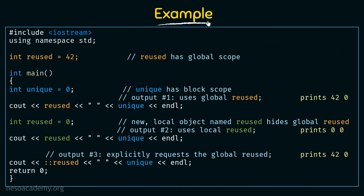Here I have a program. We have our header and using namespace std. I am declaring a variable called reused of type integer and initializing it with the value 42. This declaration is made before the main function — declared outside everything. When you declare a variable outside the main function, that is a global declaration, so reused has a global scope.